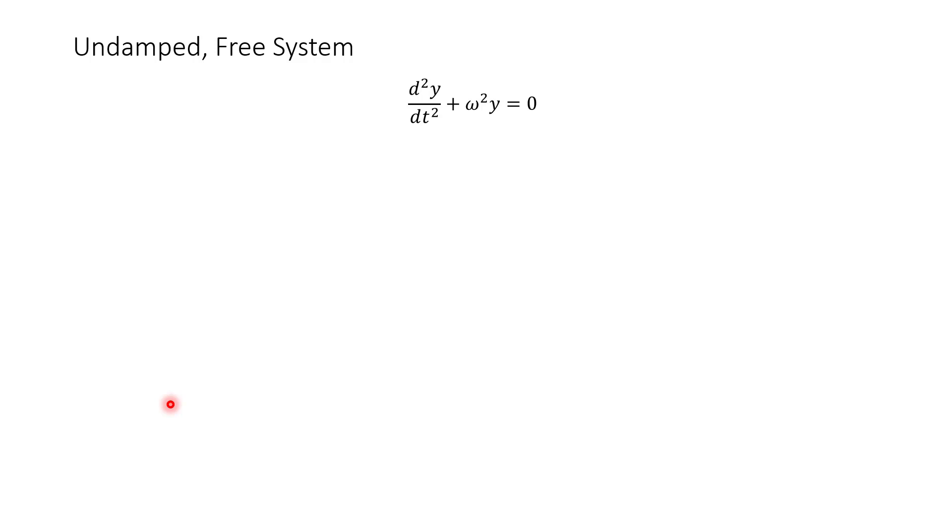So our undamped free system, we have our characteristic equation for the second order differential equation. And we just have r squared plus omega squared equals zero. So if you solve for your roots, you're going to get plus and minus omega i. And so then our general solution to this second order differential equation is y equals c1 cosine omega t plus c2 sine omega t.